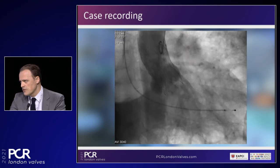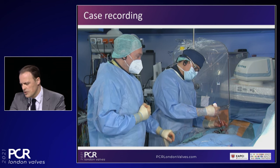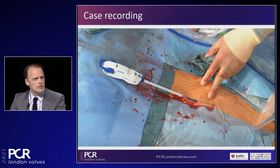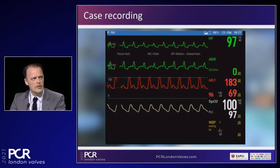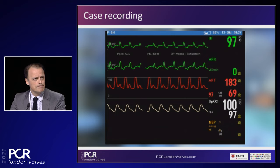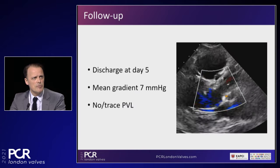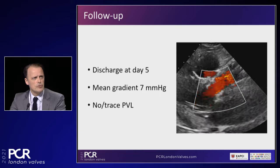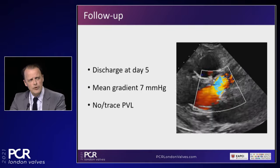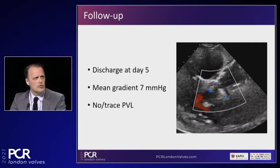The procedure takes approximately 30 to 35 minutes in anatomically straightforward cases. Vascular closure is achieved with the closure system of choice and pressure bandage. Final hemodynamics show 70 mmHg diastolic pressure, indicating a good outcome. The patient is transferred to a holding area and then to the regular ward. Discharge occurred on day five. Discharge echo shows a mean gradient of seven mmHg with only trace, hemodynamically irrelevant leakage—a nice result.